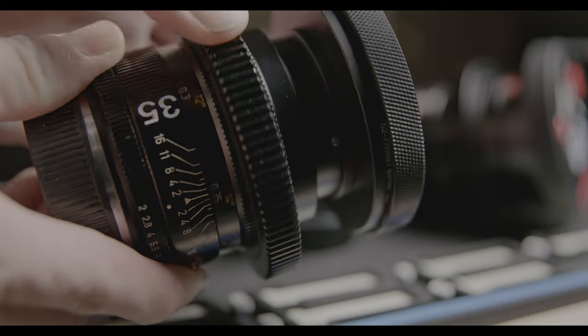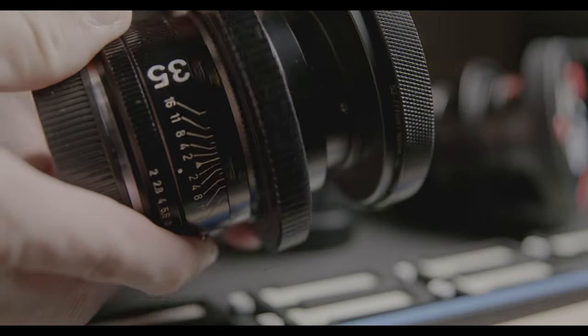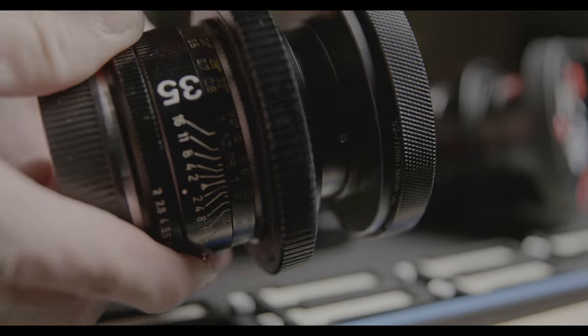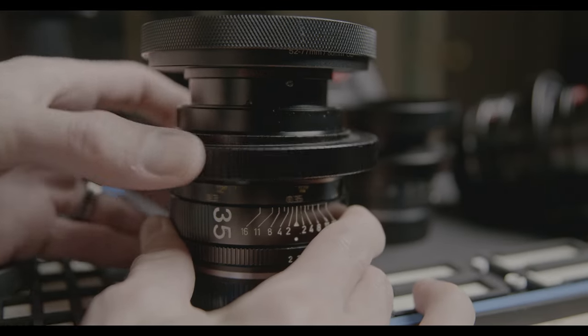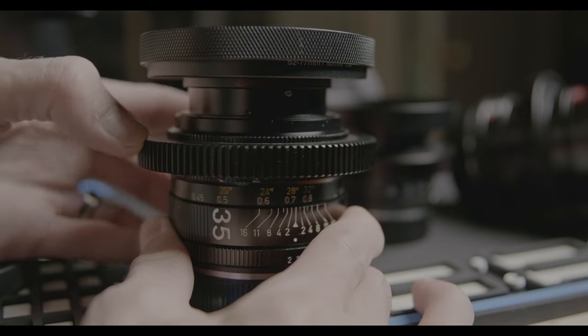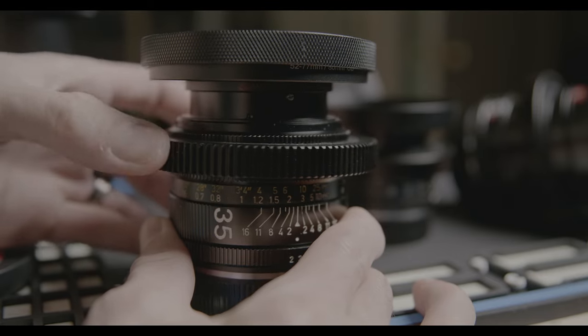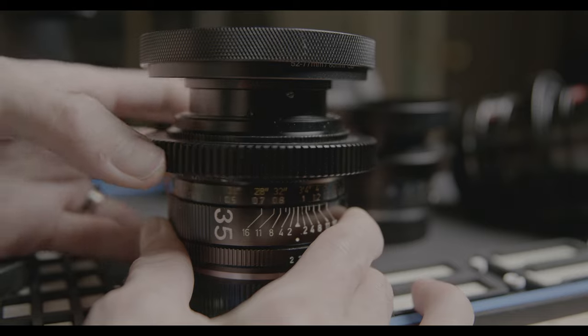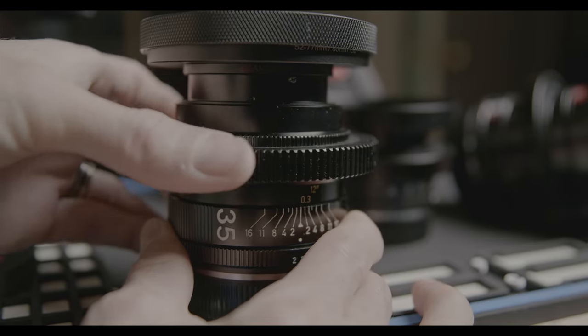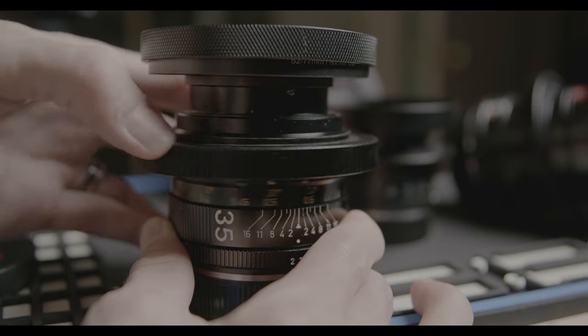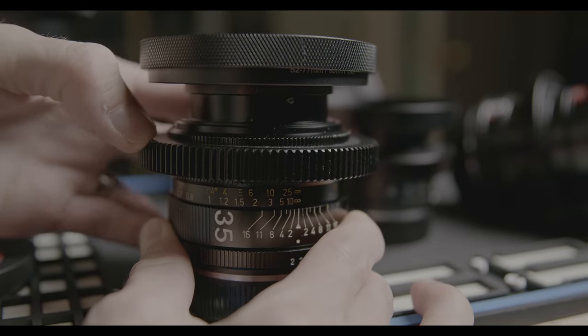Now the Leica Summicron does have a pretty decent impressive focus throw, I'd say it's around 270 degrees, but one thing to take note of is this is called non-constant volume. Notice the lens travel, how far that front lens barrel extends when pulling focus on the Leica R. This is going to be a bit of a problem when using clamp on matte boxes causing stress on your lens.